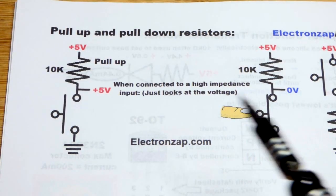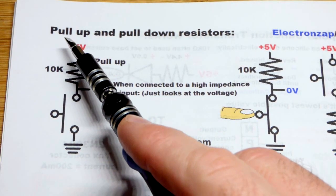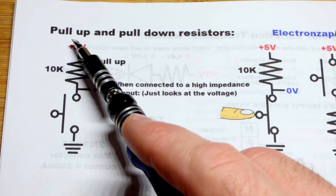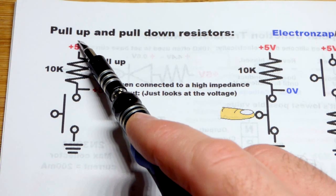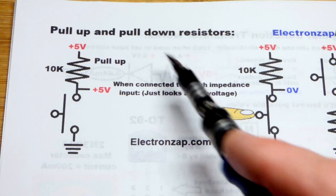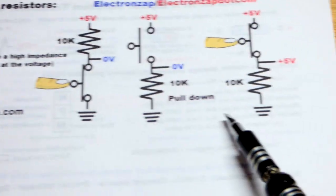So now in this video we're going to look at a very common circuit fragment for integrated circuits especially, but in any case, that's the pull-up resistor, which we have over here, and the pull-down resistor, which we have over here.